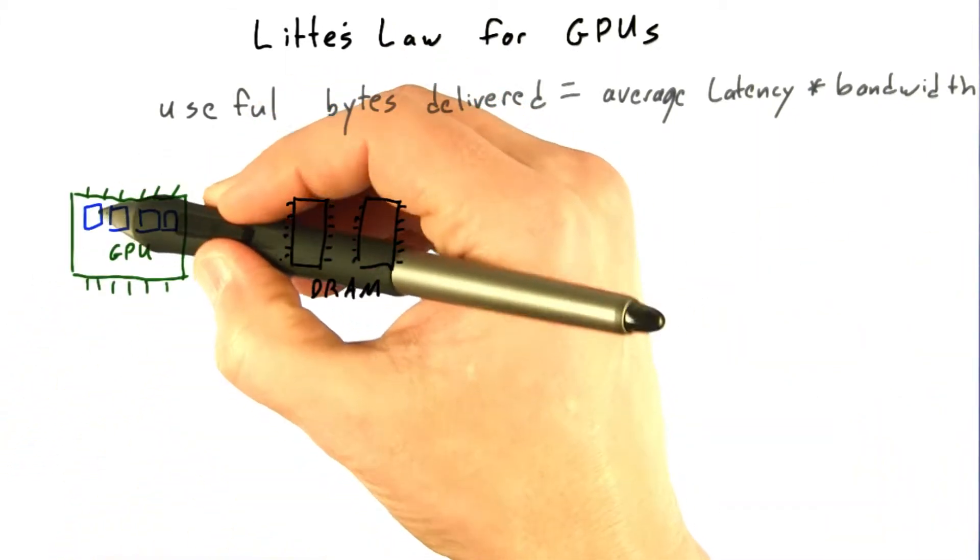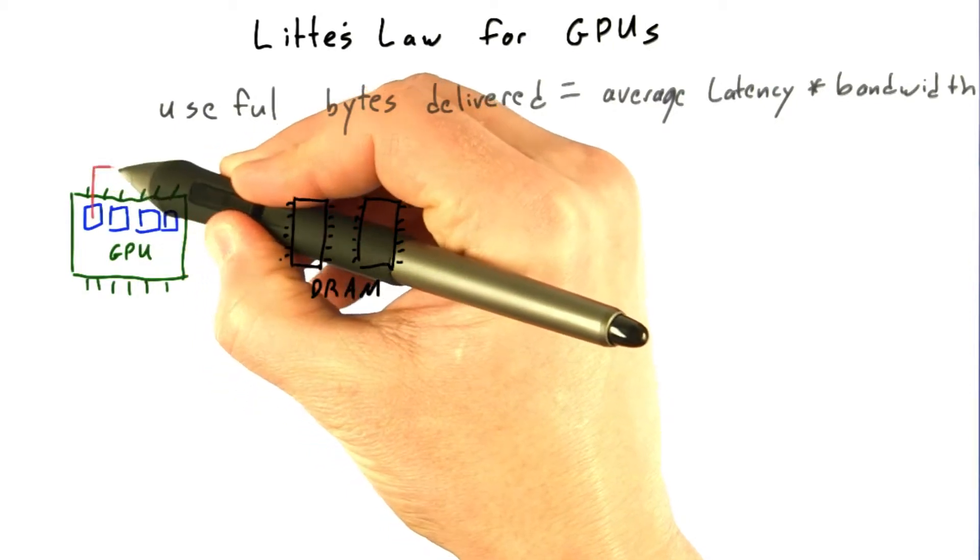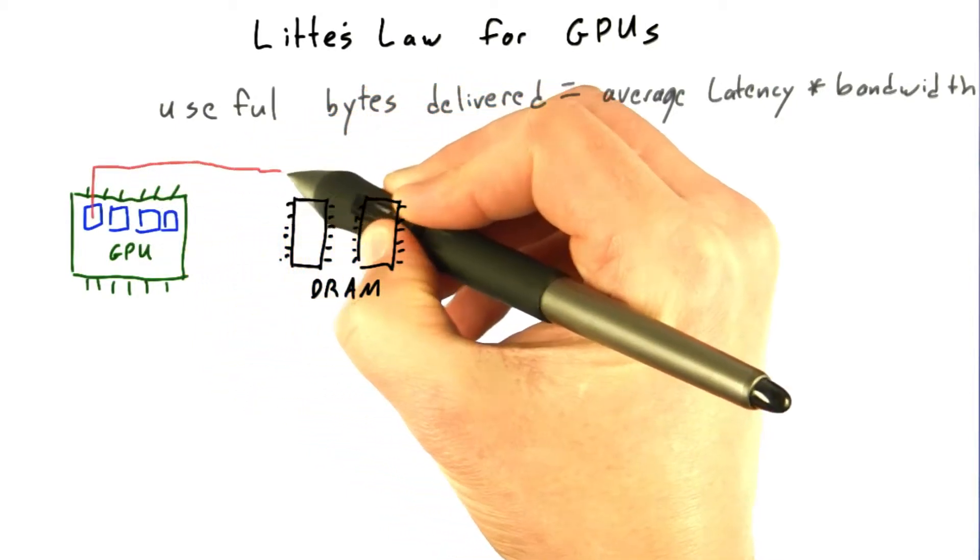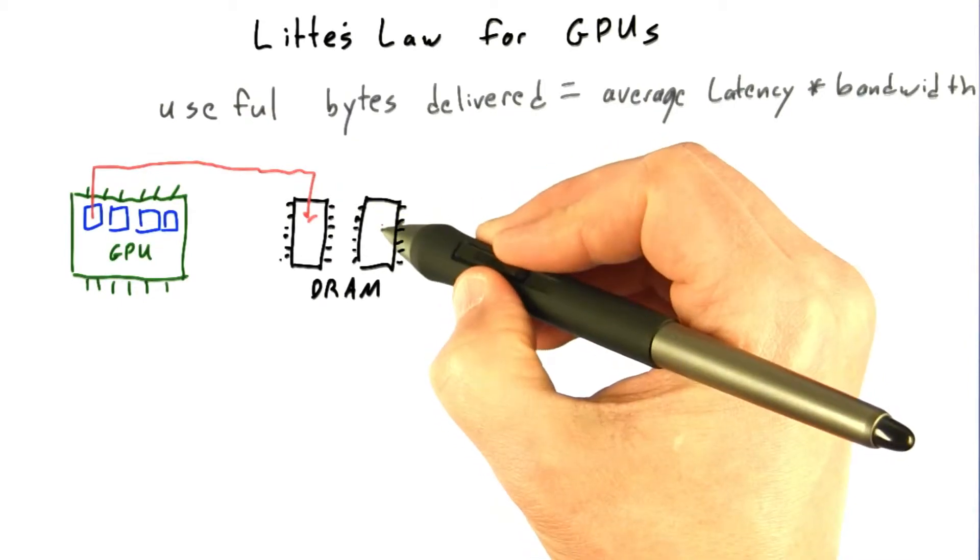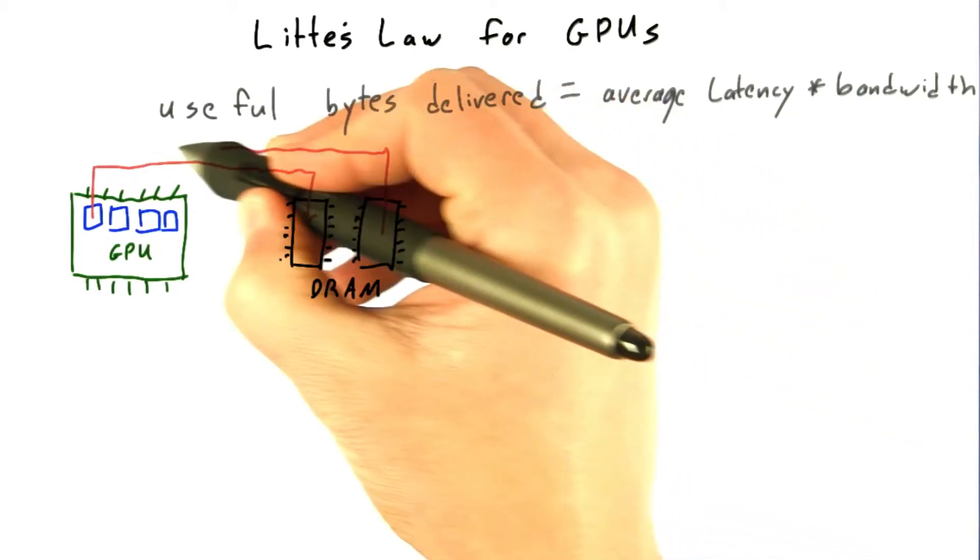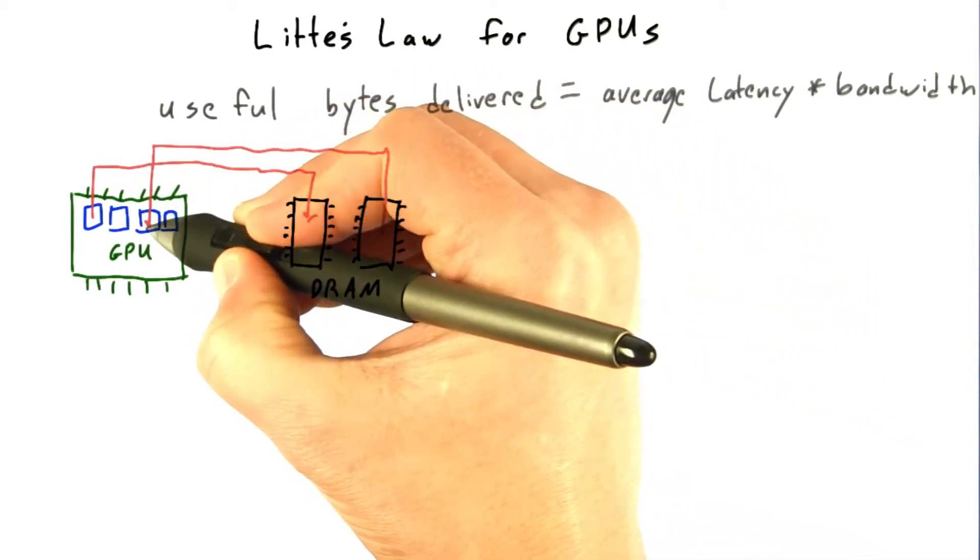First of all, there's a minimum latency to take a signal or a piece of data all the way from an SM to somewhere on the DRAM, or to take information from the DRAM and pull it into an SM.